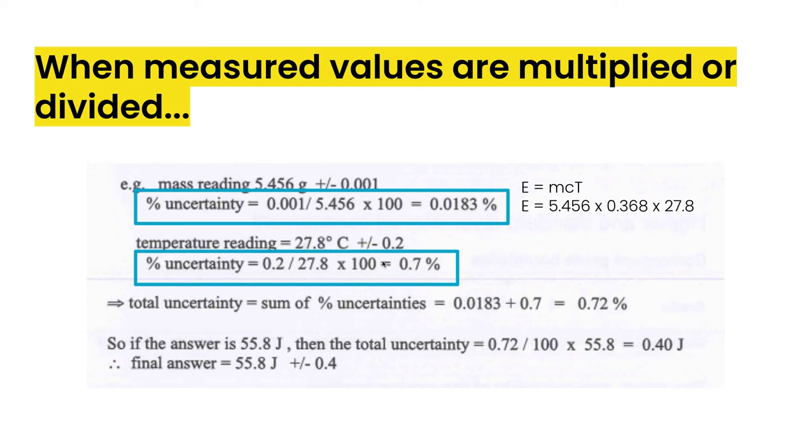Now we're in a place where we can add the two uncertainties together. So that gives us about 0.72. I wouldn't round it off here, but it's just showing rounded off for now. And then whenever you have a relative uncertainty that you've calculated for a calculation, you always need to switch it back to an absolute uncertainty.